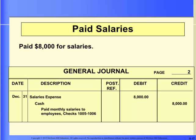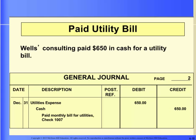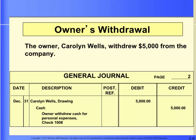It's time to review how we would record transactions involving expenses. When the business pays $8,000 in salaries to its employees, they would debit salaries expense for $8,000 and credit cash for the same amount. When the business pays a utility bill of $650, it will debit utilities expense and credit cash for $650. When the owner withdraws $5,000 for personal use, the accountant will debit the Carolyn Wells drawing account and credit the cash account for $5,000. Remember that the drawing account is an equity account, not an expense.